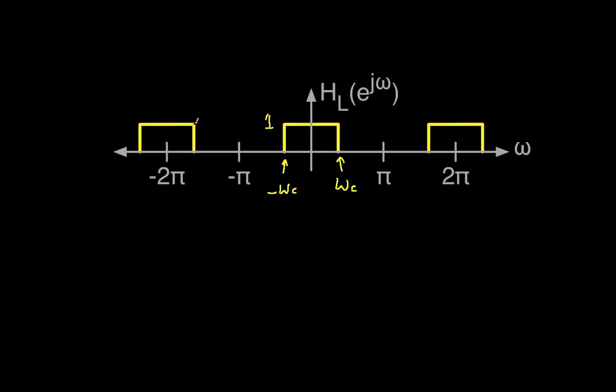Now you'll notice that this is a periodic function, and it's periodic with period 2 pi, so this pass band gets repeated every 2 pi. We'll use that to our advantage in a little bit.